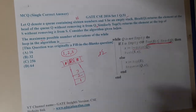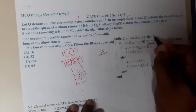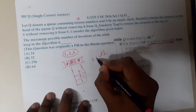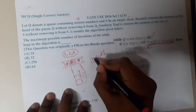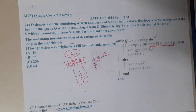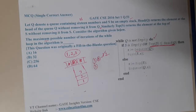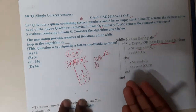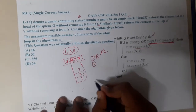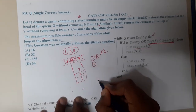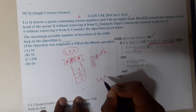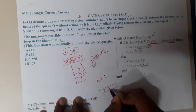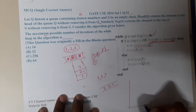When elements are in ascending order, the queue empties after just three iterations — so the loop count equals the number of elements. Now let us try descending order, where the behavior will be different. Let us take three, two, one in the queue.